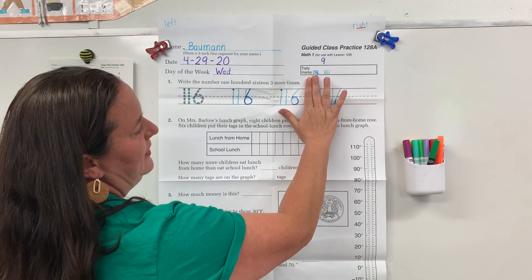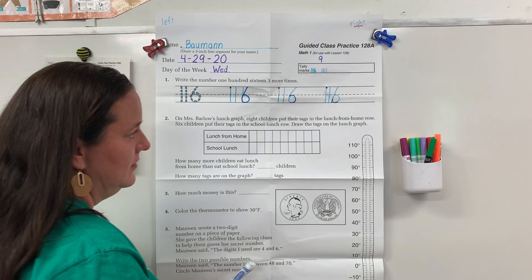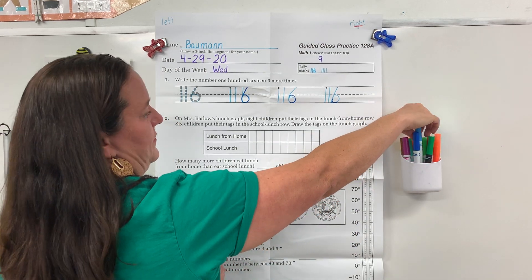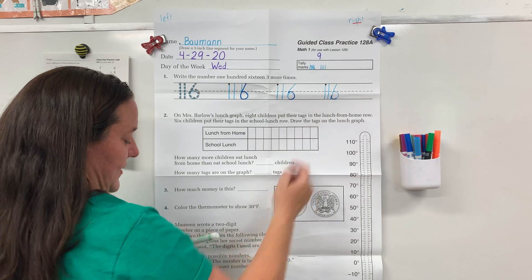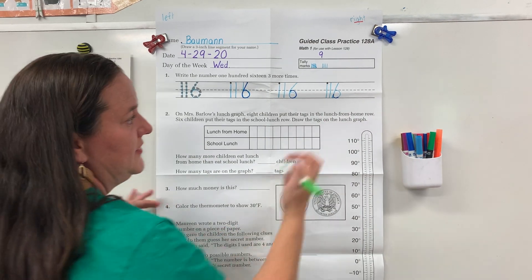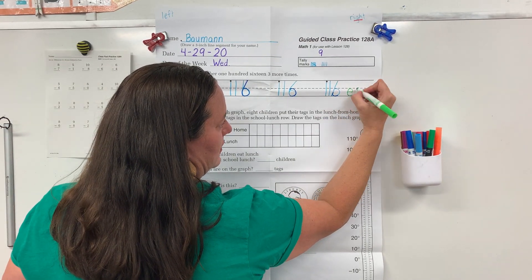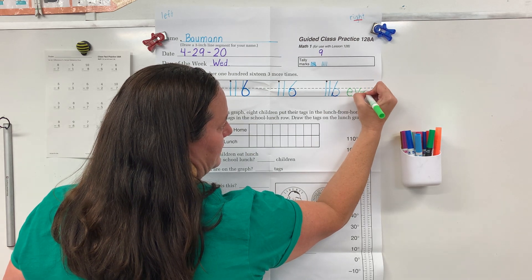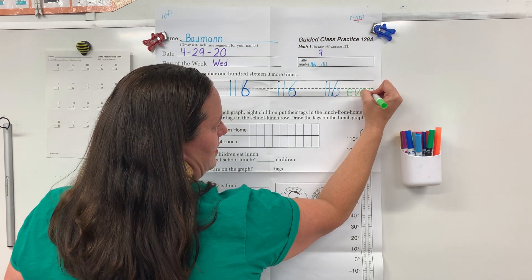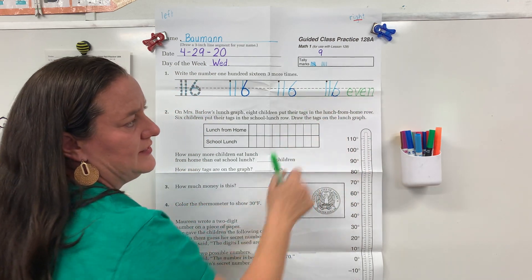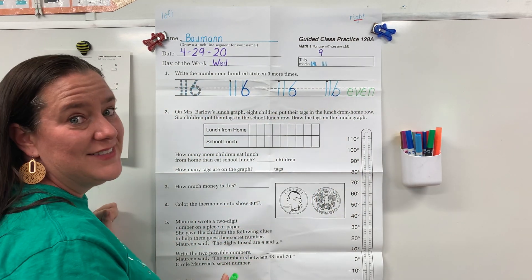Go ahead and write even or odd. Count by threes to find your digits on the line. 6 is in the 1s place, so you should have said even. All your letters should be the same size, the same height, resting on the baseline.